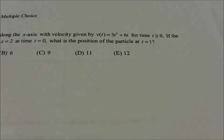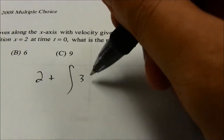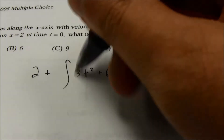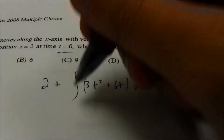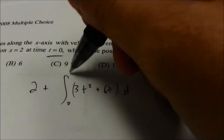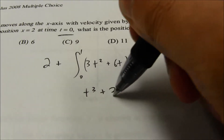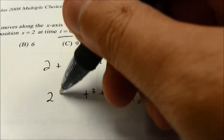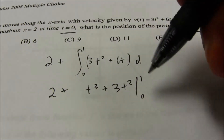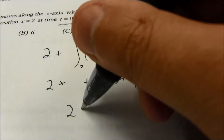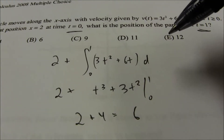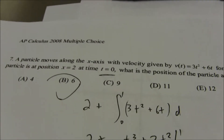Number 7: a particle moves along the x-axis with velocity given by that function. If the particle is at position 2 at time 0, what is the position at time 1? We use a definite integral: starting position 2 plus the integral from 0 to 1 of the velocity. The antiderivative is t cubed plus 3t squared, evaluated from 0 to 1. At 0 it's all 0; at 1 it gives 1 plus 3 equals 4. So 2 plus 4 equals 6, which is answer B.